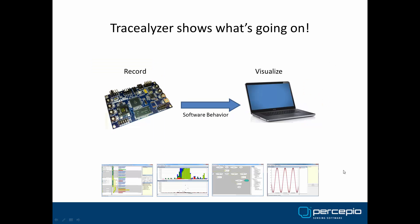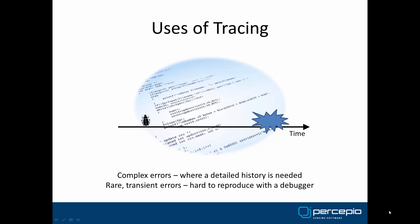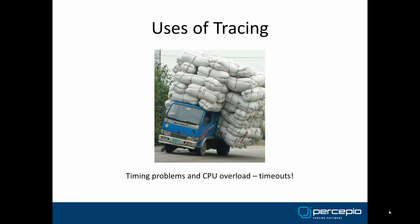Percepio Tracealyzer technology allows you to record and visualize the runtime in a spectacular way that makes it easier to find solutions and to optimize performance. Tracing is very useful for non-trivial errors, where it takes some time before a bug propagates to an error condition. Tracing can also be used to analyze transient errors from field deployments, which are often hard to reproduce in the lab. You may also use tracing to analyze timing issues, software performance, and CPU usage to find opportunities for optimization.